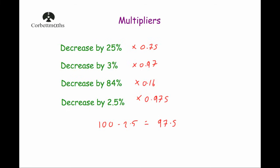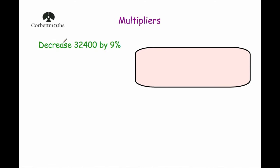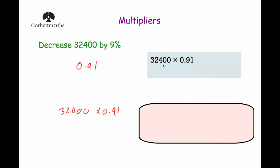Our last example: we're going to use a multiplier to decrease 32,400 by 9%. If you decrease by 9%, you're left with 91%, so your multiplier is 0.91. Multiplying 32,400 by 0.91 gives us an answer of 29,484. That's much quicker and simpler than finding 10%, then 1%, working out 9%, and subtracting. With a calculator, you can quickly work out any increase, decrease, or percentage of an amount.